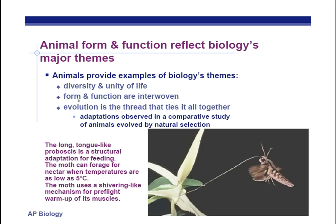For example, we have the long tongue-like proboscis as a structural adaptation. The structure is related to the function of reaching down to the center of a flower to get nectar. So the relationship of structure — a long proboscis — to function — finding that sweet sugary substance in the bottom of flowers. Also, evolution is the thread that ties it all together: adaptations observed in a comparative study between different living things as a result of natural selection to their environments.